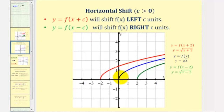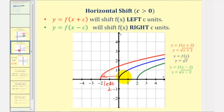Looking at the basic parent function graphed in blue, y equals the square root of x: if we graph y equals the square root of the quantity x plus two — notice the plus two is under the square root — this would shift the basic function left two units. And if we graphed y equals the square root of the quantity x minus two, this would shift the basic square root function right two units. Notice the direction of the horizontal shift might be the opposite of what you were thinking: if we have minus a constant, it's shifted right; if we have plus a constant, it's shifted left.